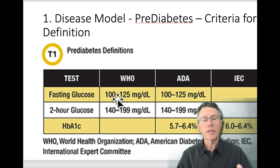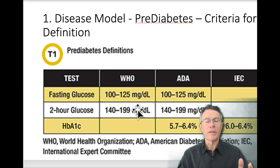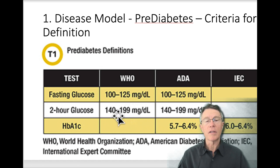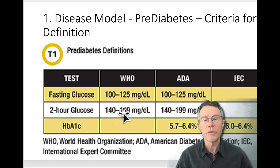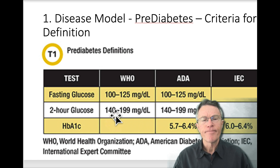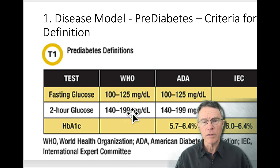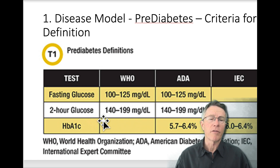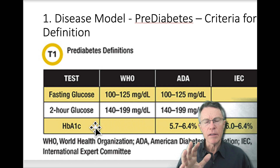Briefly, fasting glucose: the WHO says 101 to 125, the ADA says that as well, and I would agree with that definition. However, I warn my patients once they start hitting the high 90s, they need to be looking at this. Two-hour glucose: 140 up to 200. Over 200 at any time, most organizations would say that's frank — meaning full-blown — diabetes. And really, if you're looking for clear and pristine carb metabolism, you don't want to get over 120 even after a 2-hour or 75-gram glucose challenge.